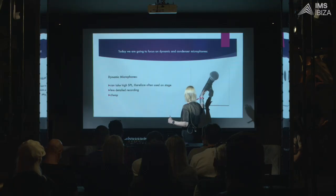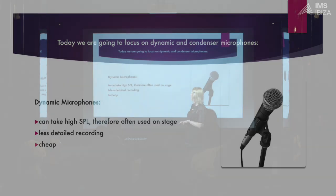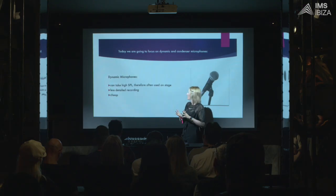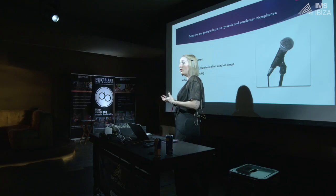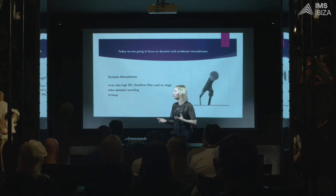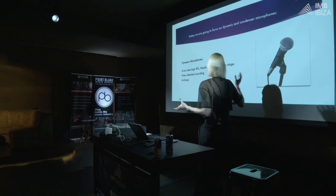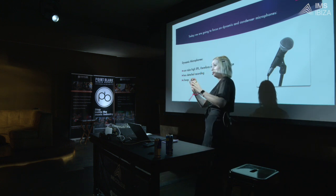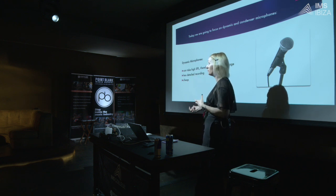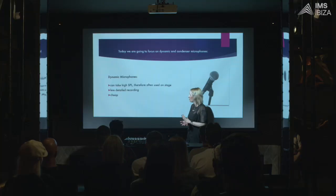Dynamic mics — we've seen these everywhere, on stages and in studios. A really good quality mic is the Shure SM58. What makes a difference between dynamic mics and condenser ones is that dynamic microphones can take high sound pressure levels, which is why you see them most of the time on stage, where there is noise, audience, music playing, and monitoring. They can handle all of that. They're also a bit more robust — they can be dropped many times and still work. They're fairly cheap as well, but they do give you a less detailed recording.